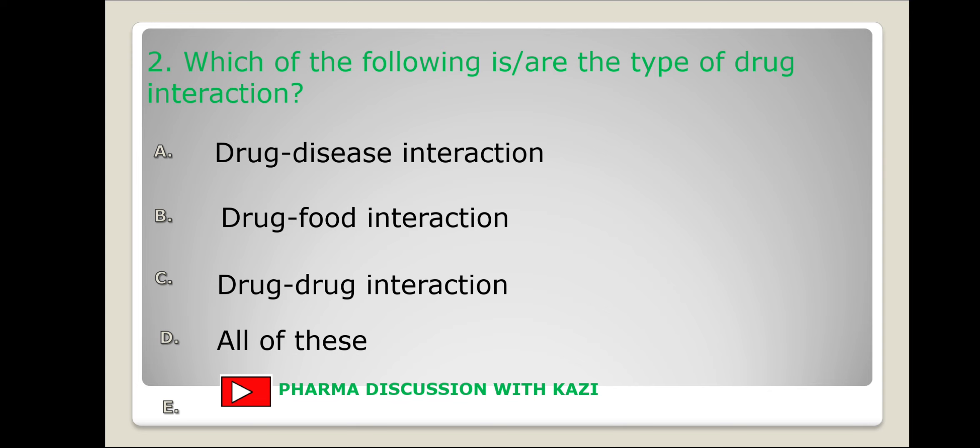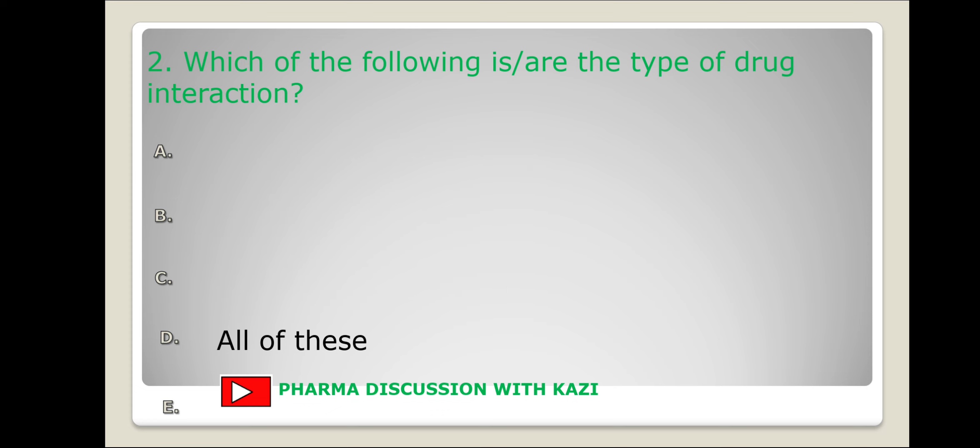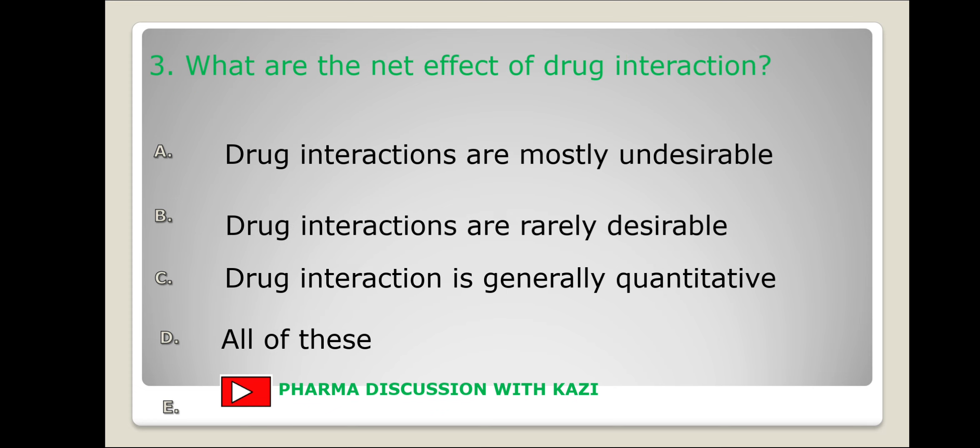Next question: which of the following are types of drug interaction? The options are drug-disease interaction, drug-food interaction, drug-drug interaction, or all of these. The correct answer is all of these.